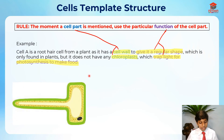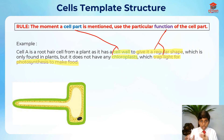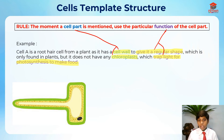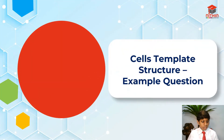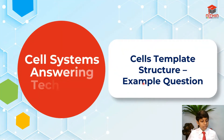So this is just the root hair cell example. This is how you must answer: when we mention a cell part, we must state its function as well. Now let's move on to the example question.